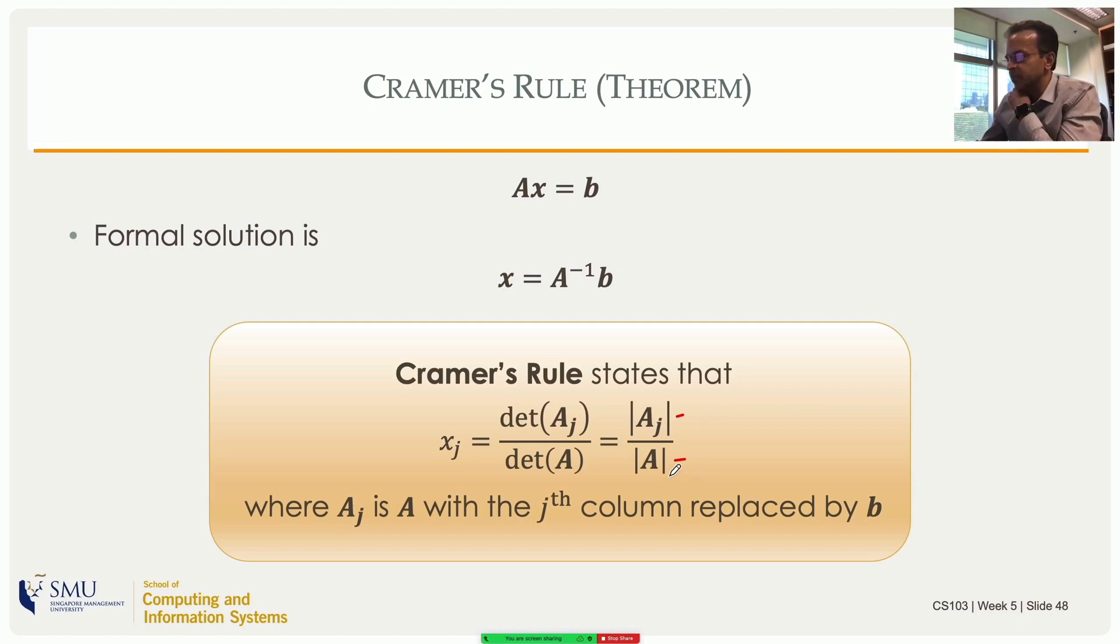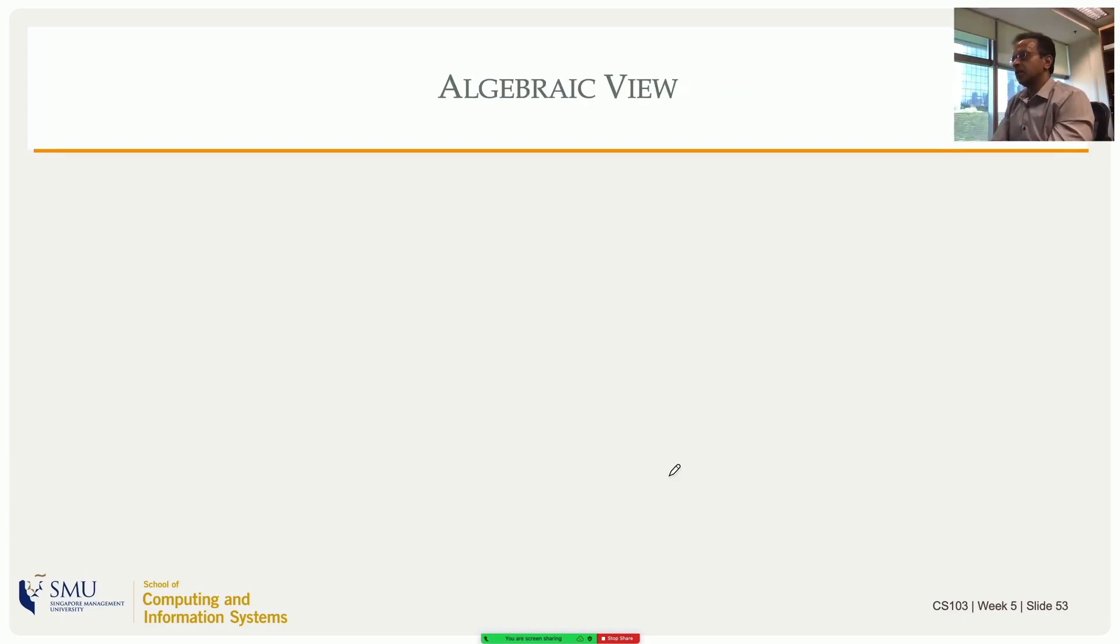Determinant computation is quite bad, it's not easy to do. Gauss-Jordan elimination will give you this solution at least n times faster, but this is Cramer's rule, mathematically probably quite nice. That actually brings us to the end of the algebraic view.